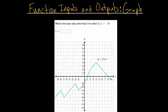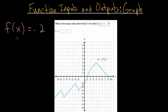In this video, I'd like to talk about function inputs and outputs, specifically focusing on graphs. We have a question asking: what is the input value other than zero for which f of x is negative 2? We're told the function equals minus 2, but we don't know the x value — and ultimately the x value is what we're trying to find.